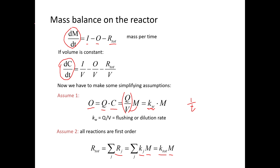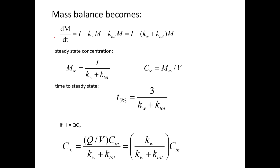We end up with dm/dt as a function of mass, which is a relatively easy equation to solve. Our equation becomes: dm/dt = I − K_W·M − K_total·M, where K_W·M is the rate of mass removal by flushing and K_total·M is removal by all other processes. Rearranging, the mass at steady state equals the inputs divided by the sum of all rate constants: M(∞) = I / (K_W + K_total). This equation is very powerful and is the one you'll use a lot in homework and on the final exam.